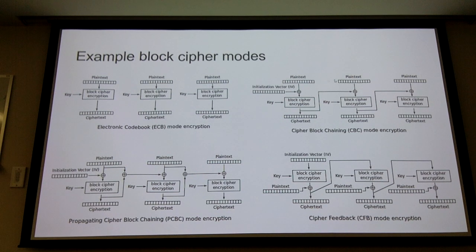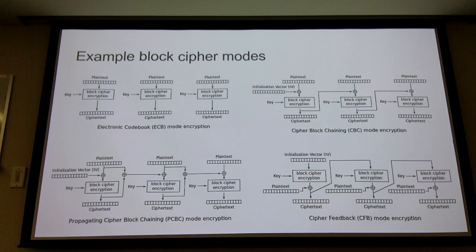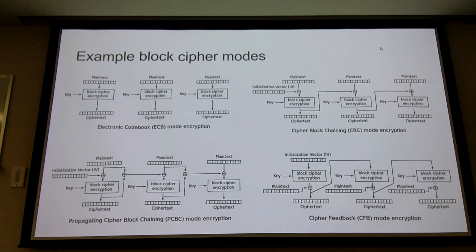With CBC, even if all plaintext blocks are identical zeros, what they're getting XORed with each time is different. There are also counter modes where instead of using an IV they increment a counter, so you know how to decrypt block N without needing to go in order — allowing parallel decryption of large ciphertexts. All these modes are pretty good; just don't use ECB, which is obviously strictly the worst way to do it.